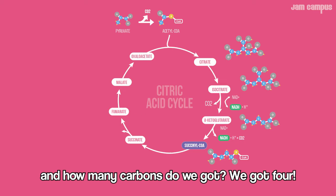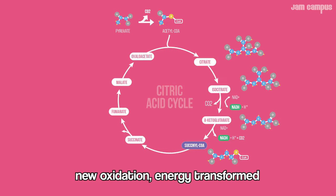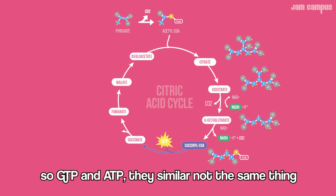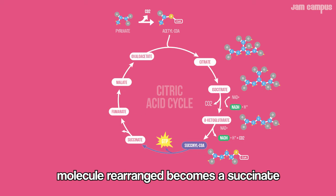Now how many carbons we got? We got 4 — succinyl-CoA. Enzyme moves: oxidation energy transforms. Synthetase moves took away, produced a GTP. GTP and ATP — they're not the same thing. Depending on the cell, you may convert GTP to ATP. Now the coenzyme gets away, molecule rearranges to become succinate.